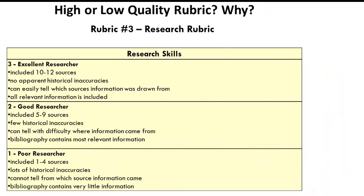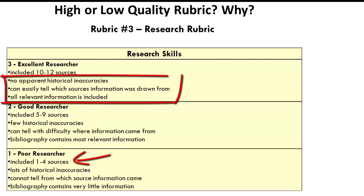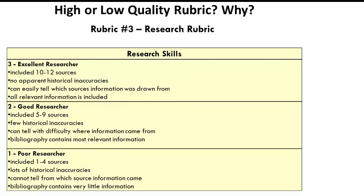Again, if we look at what constitutes a poor researcher, we see that a poor researcher includes one to four sources. What if the topic has very little written, and the researcher has demonstrated all of the other criteria listed in level three? Is this a fair assessment of the researcher? We would need to look at the learning objectives and begin from there to see if the rubric actually assesses what it was intended to measure, but hopefully you are beginning to see the qualities of a strong rubric.